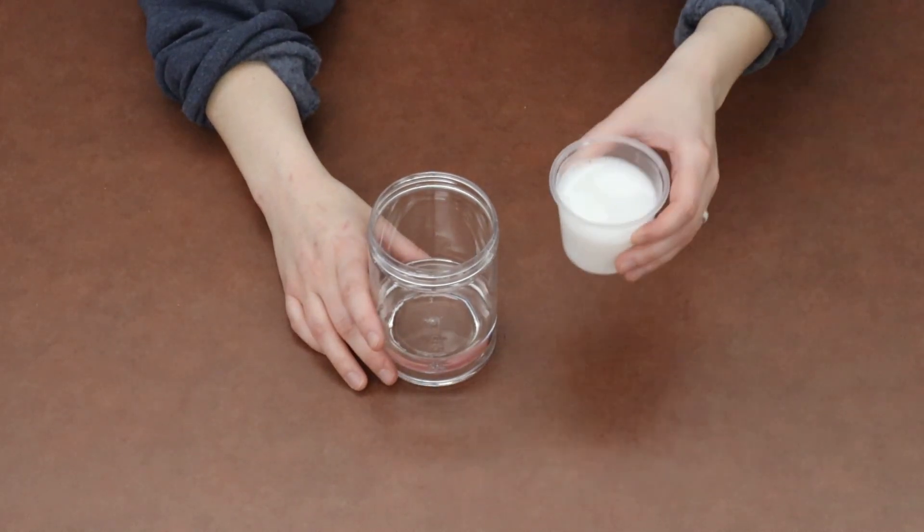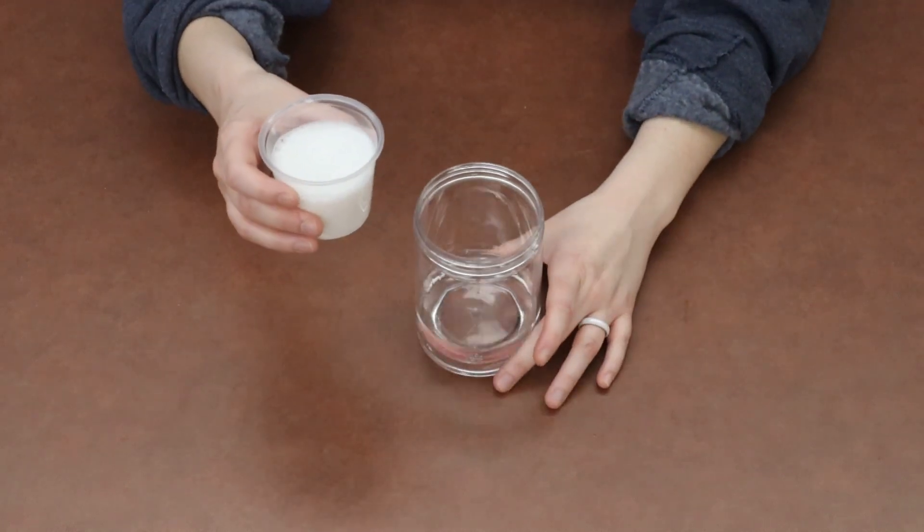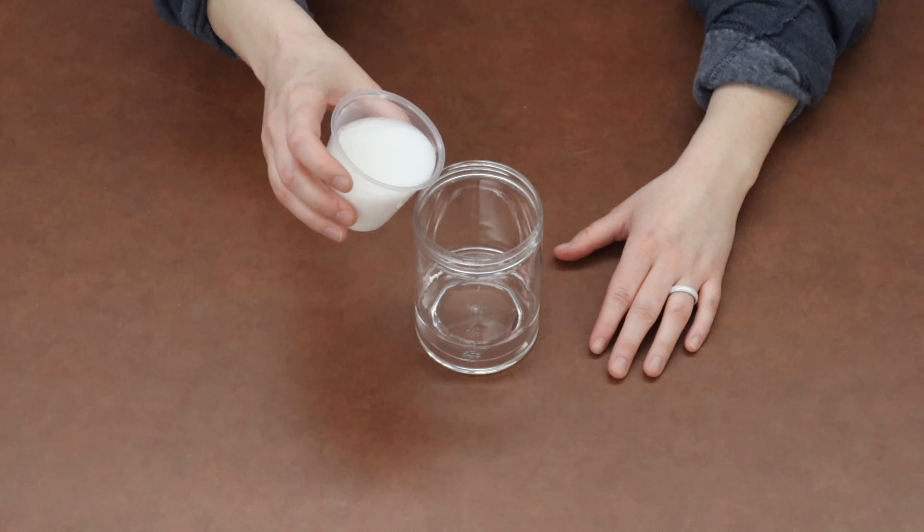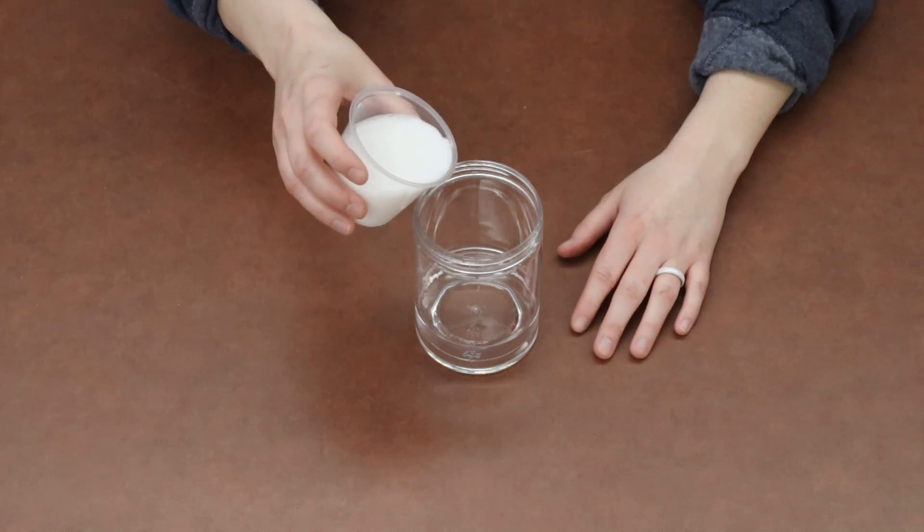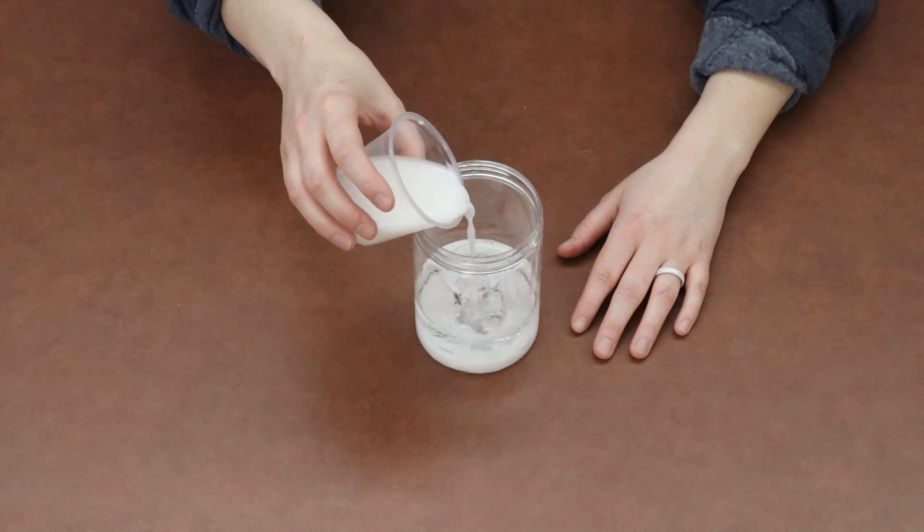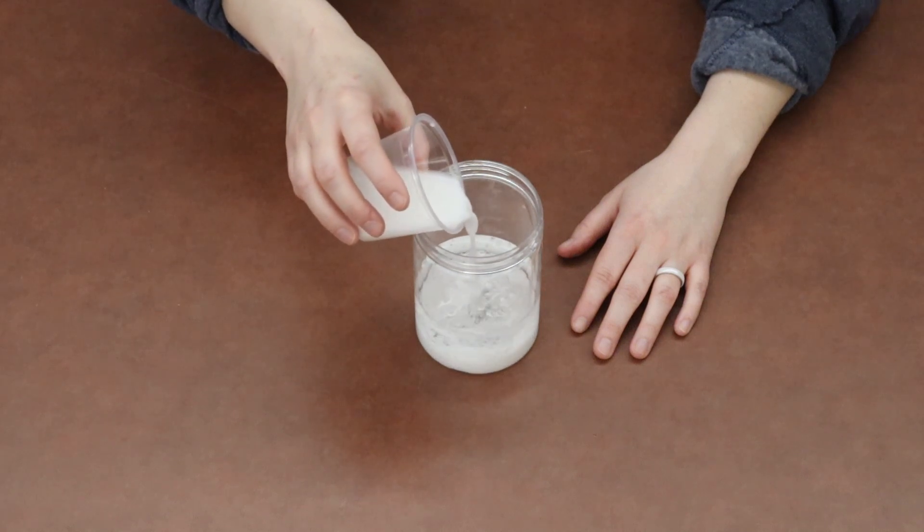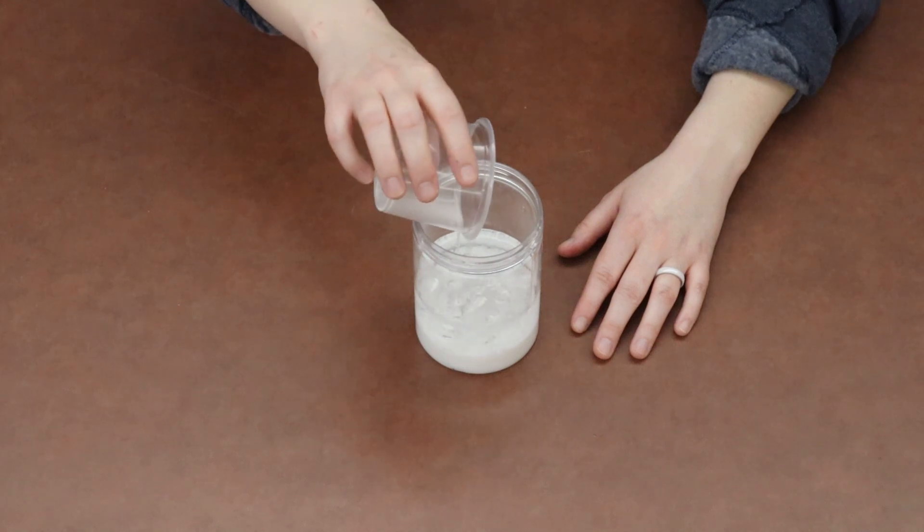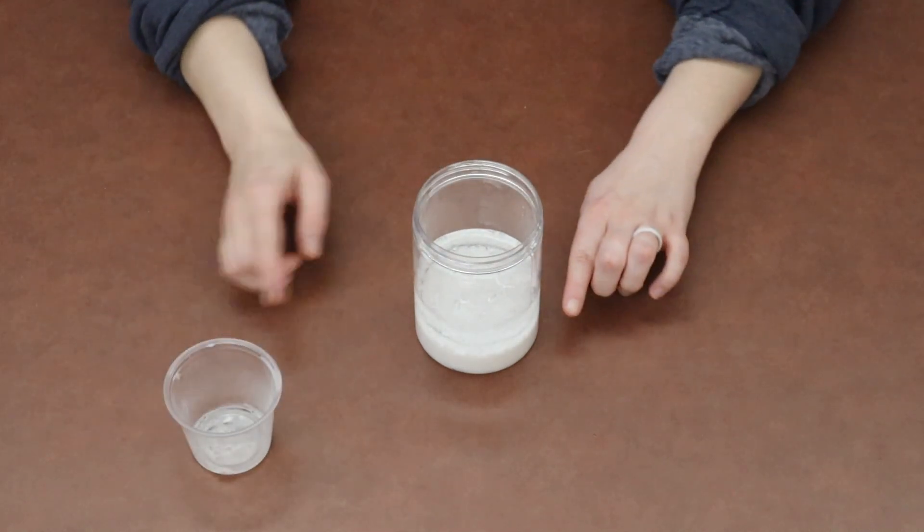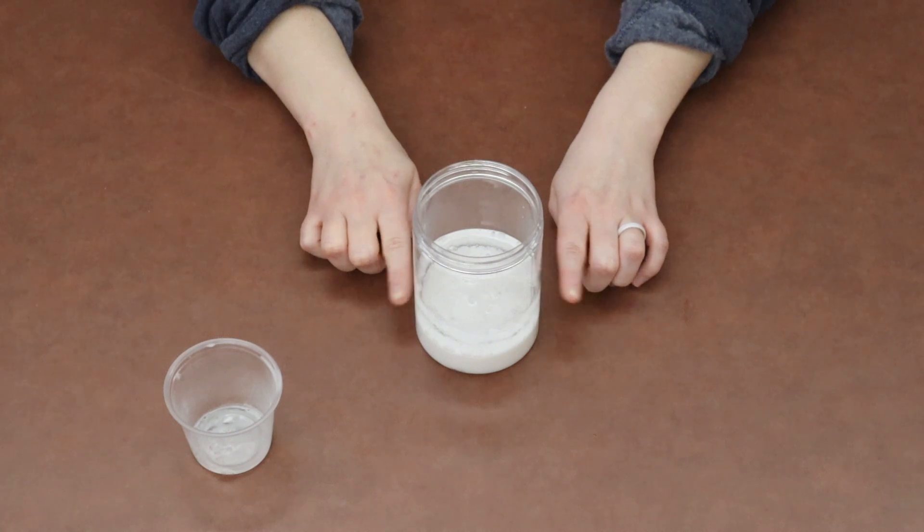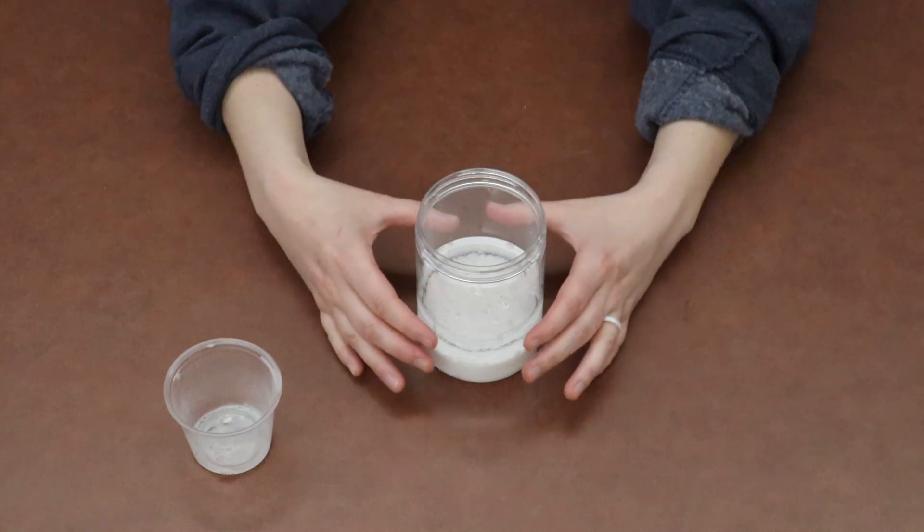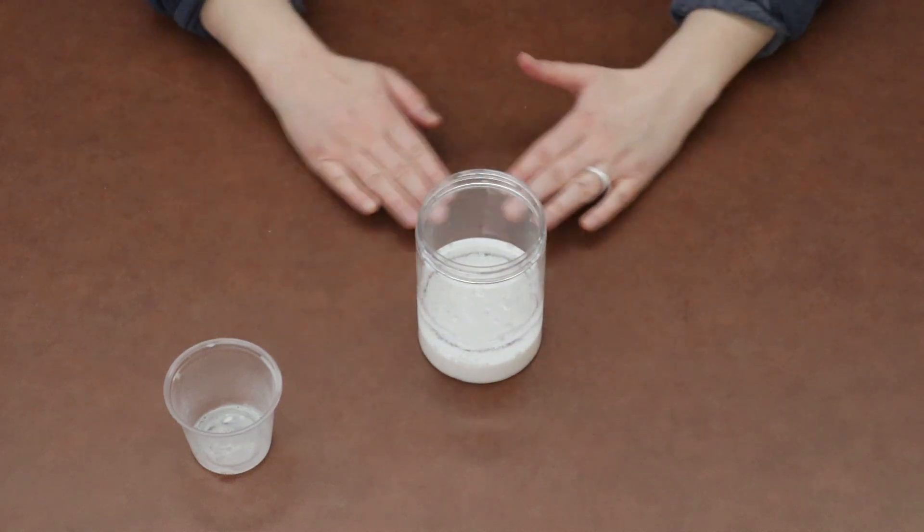Alright, so I want all our littles to take that cup with their white water mixture and slowly pour it into their baby oil and watch what happens. And again, you should notice that that water sinks all the way to the bottom. So right now we have the water at the bottom that's white and the clear baby oil sitting on top.